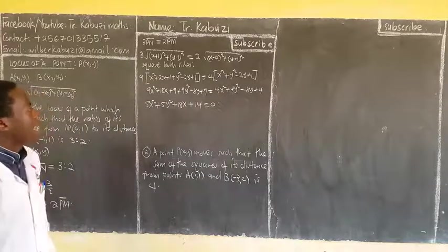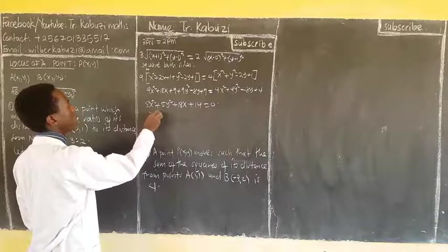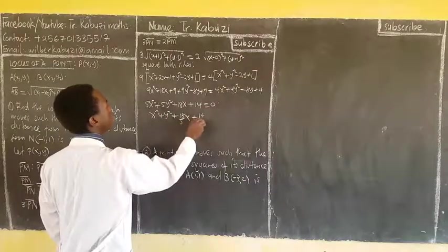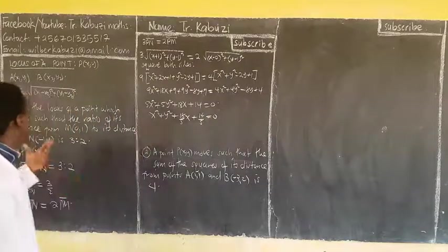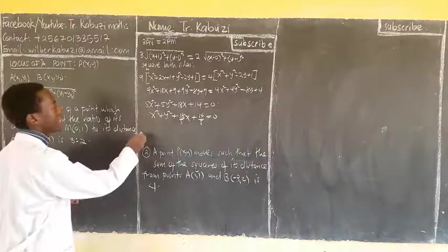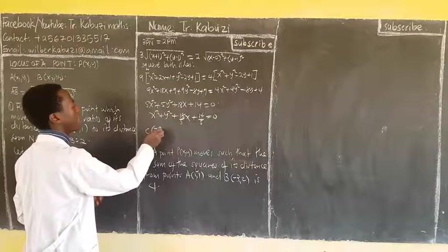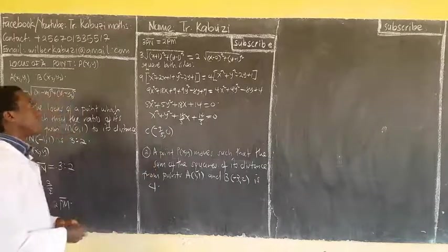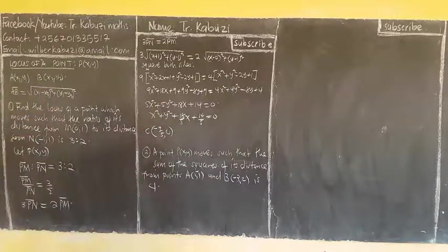So that's that. You can compare here to the general which is x squared plus y squared plus 2gx plus 2fy plus c equals zero. Divide by 5: y squared plus 18 over 5 x plus 14 over 5 equaling to zero. You can compare it, so the locus is a circle. The center is going to be (-9/5, 0) and you can get the radius from there.